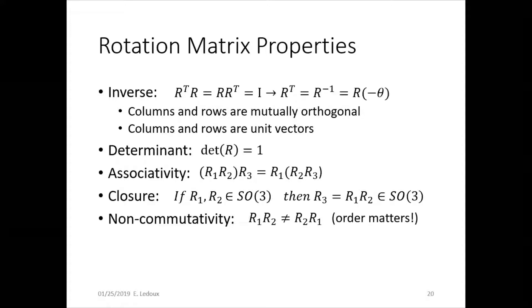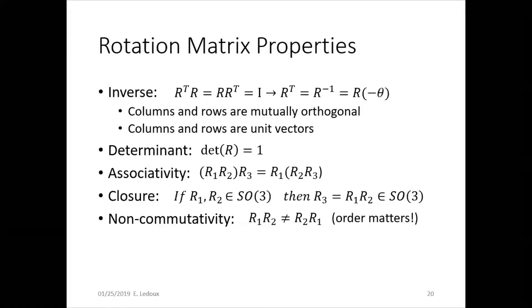There are several properties associated specifically with rotation matrices — not every 3×3 matrix is a rotation matrix. Because the rotation matrix expresses orientations, its determinant has to equal 1, and it is composed of unit vectors. The transpose times the original equals the identity matrix, which is a square matrix with ones along the diagonal and zeros everywhere else. The columns and rows are mutually orthogonal — so they're perpendicular — and they're unit vectors, because they represent the direction of each axis. Because of that, the determinant equals 1.